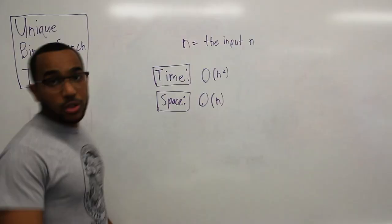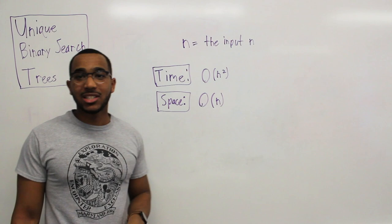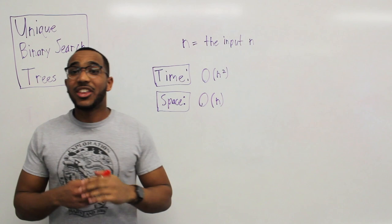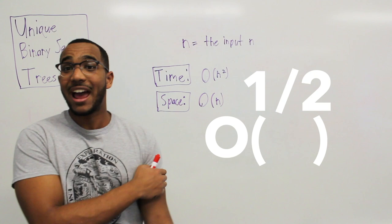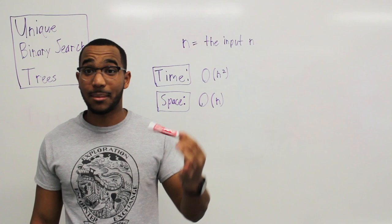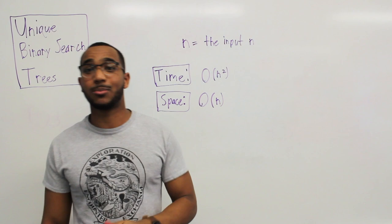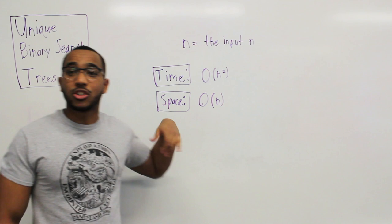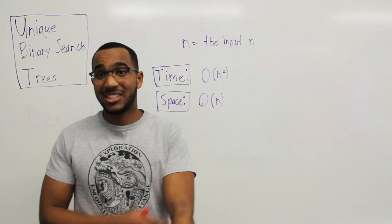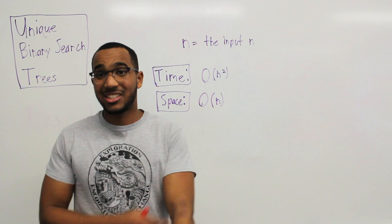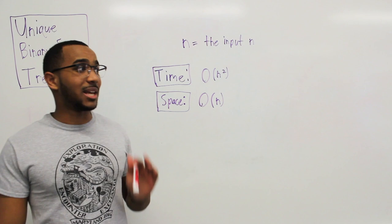Let's look at time and space complexity. Let n be the input. Time complexity is O(n²), though be aware this may be more like one-half n² triangularly — there's a more detailed mathematical analysis in the description provided by LeetCode. Space complexity is linear: we store solutions to n+1 subproblems (including the zero subproblem), so we scale in a linear fashion as n gets arbitrarily large.